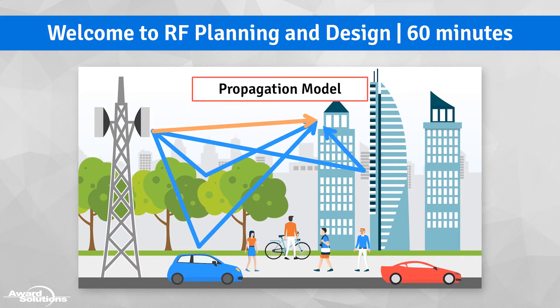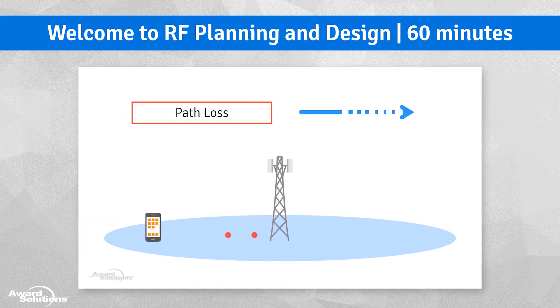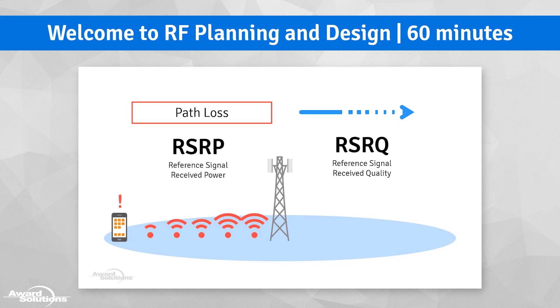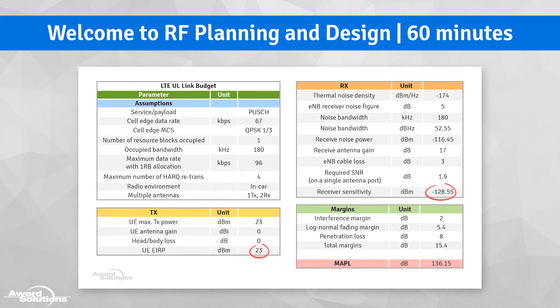This course includes an overview of signal propagation behaviors like path loss, multipath, and shadowing, as well as what link budgets are and how to use them in RF design.